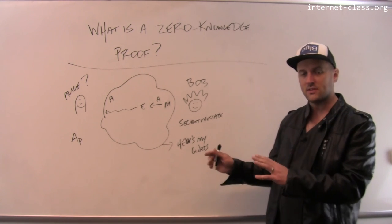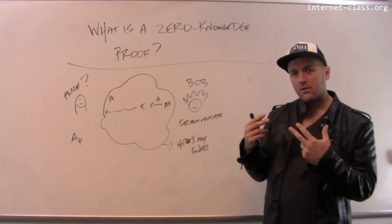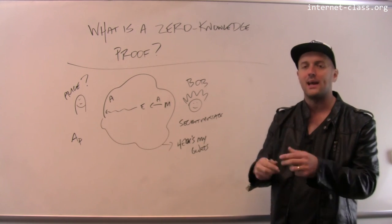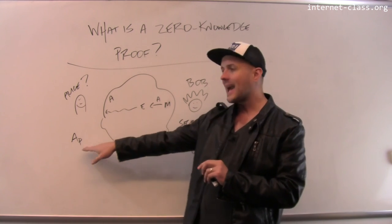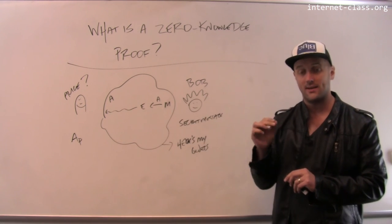In many cases, such as this one, these interactive zero-knowledge proofs involve the prover, who's in this case Alice, doing something that only they could do. So in this case, only Alice could decrypt these messages that are encrypted with her public key because only she has the private key.